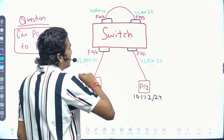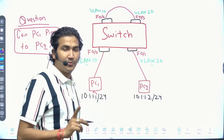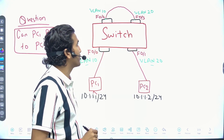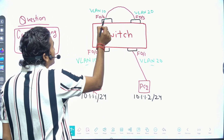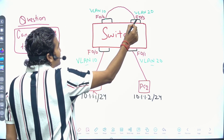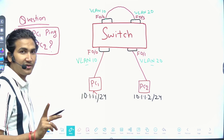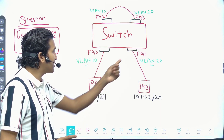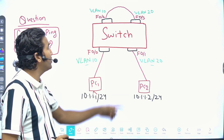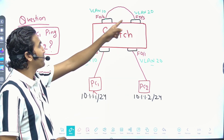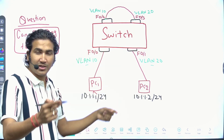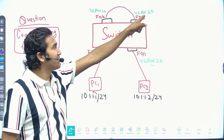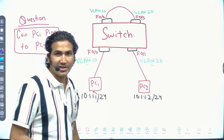One end of the Ethernet cable is connected on port 0/2 and the other end on port 0/3. Port 0/2 is in VLAN 10 and port 0/3 is in VLAN 20. Port 0/0 is connected to PC1, port 0/1 is connected to PC2. The question is: can PC1 ping PC2?